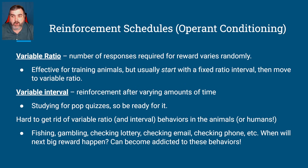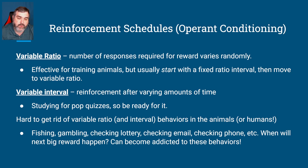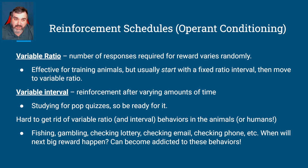Variable ratios are when the number of responses required is going to be varied. So maybe you give the dog a treat every three times it barks, then every five times, then one time, then four times — you mix it up. This is very effective for training animals. You usually start with a fixed ratio so the animal knows it's going to get a reward, but then you move to a variable ratio because you want the animal to perform the behavior without being rewarded every single time.